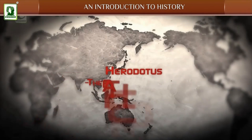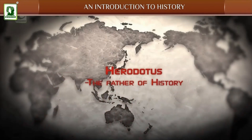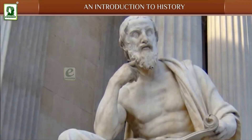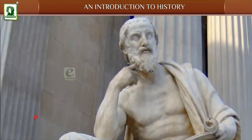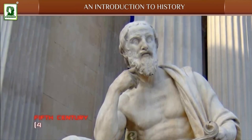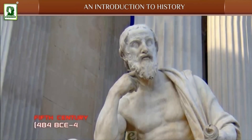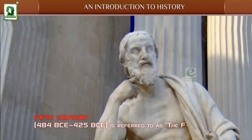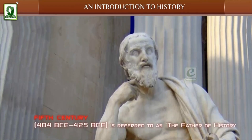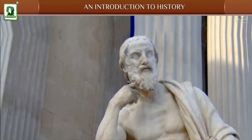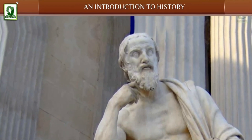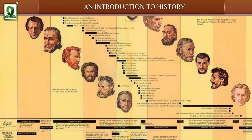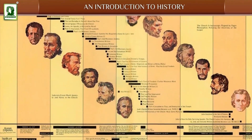Herodotus, the father of history. Herodotus, a Greek historian who lived in the 5th century, 484 BCE to 425 BCE, is referred to as the father of history. He was the first historian who systematically collected his material and arranged them in a chronological order.